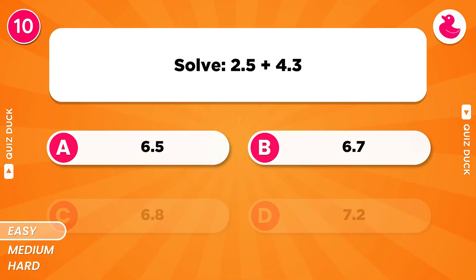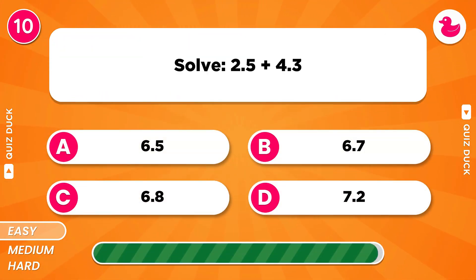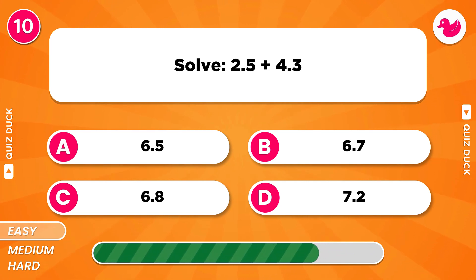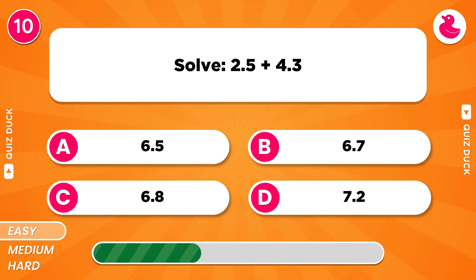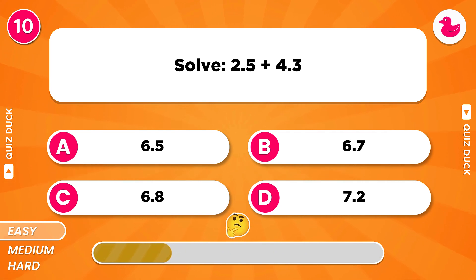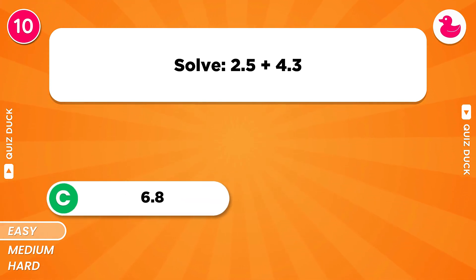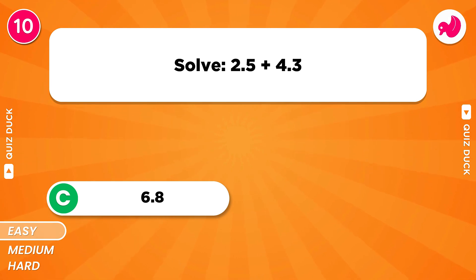What is the total of 2.5 plus 4.3? The total is 6.8.